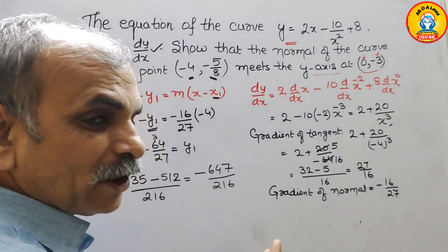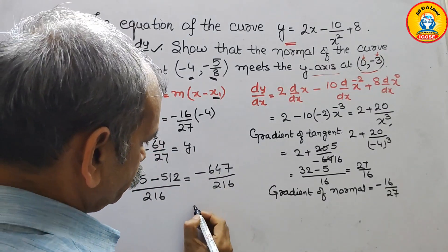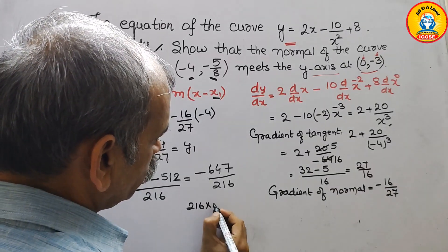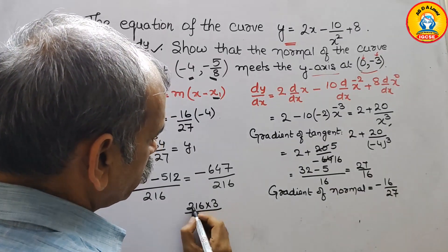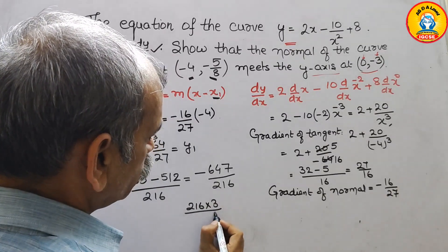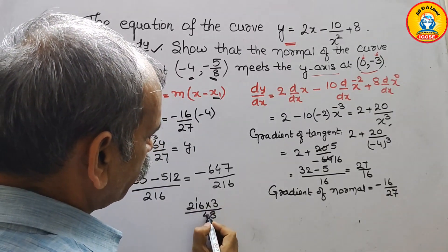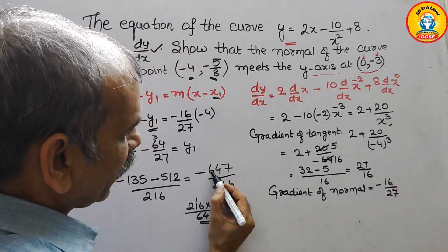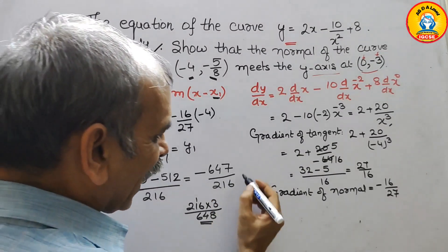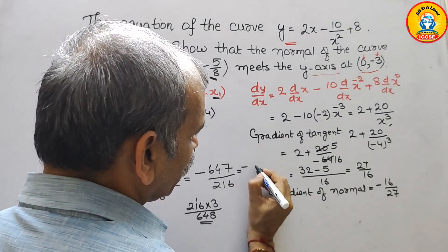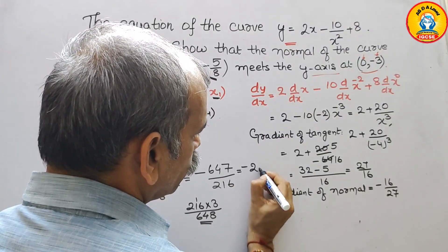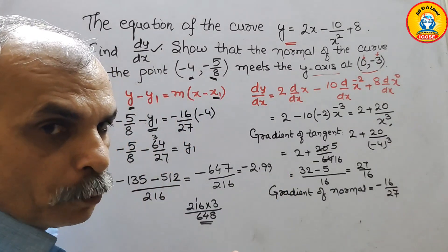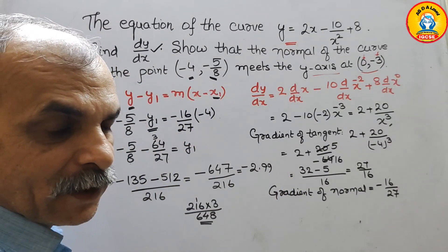You can see that 216 into 3 is 648. But here they have 647, that means this is equal to approximately minus 2.99, which is effectively minus 3.